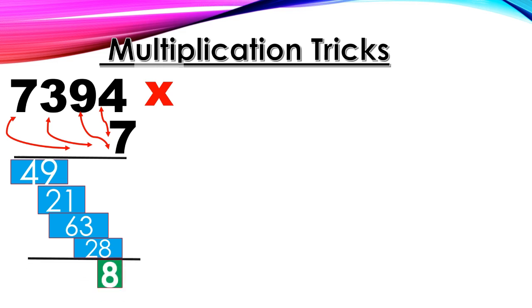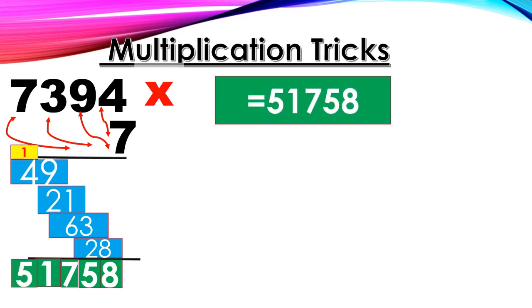Now add all. 8, 5, 7, 11. Balance 1 on the top. Then 5. That is 51,758.